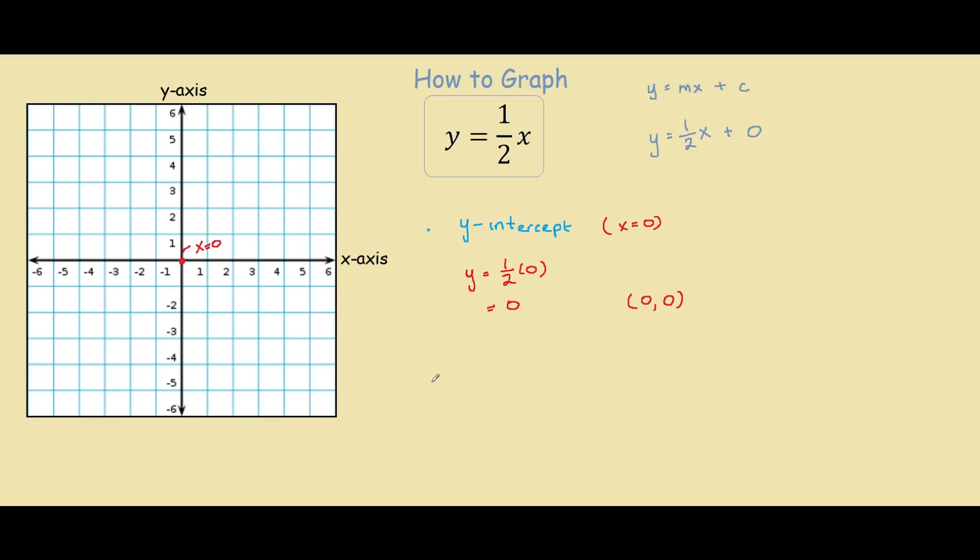Our second point will be using the slope of the graph. And to find the slope of the graph, we look at the number in front of the x, this number over here. This is our m. And this number here represents our slope. So our slope is one half.